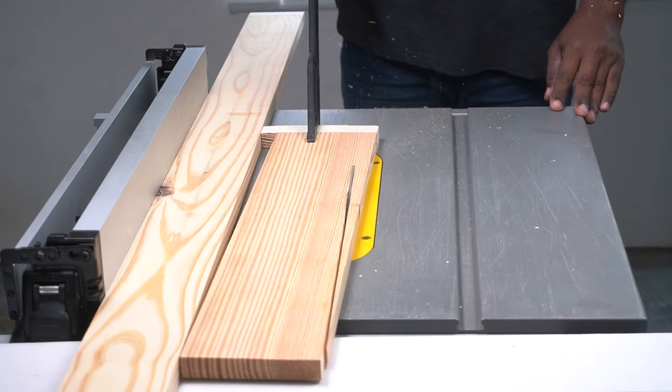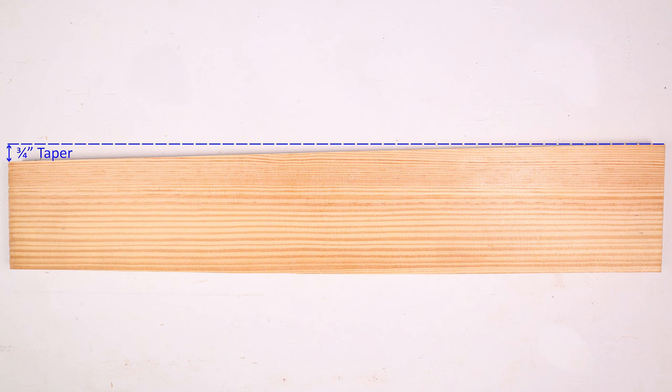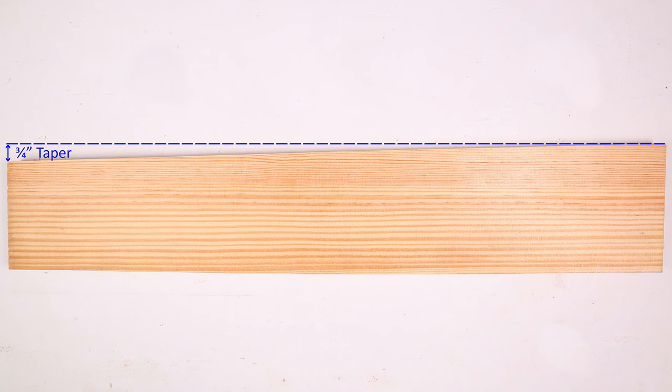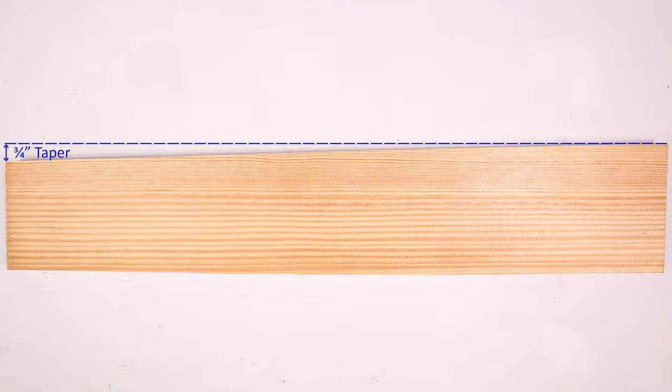Turn off the saw after the cut has been made and sand the edge if needed. So with that, you have successfully completed making a taper cut of three-quarter inch width. If you liked this video, like and subscribe. Thanks for watching.